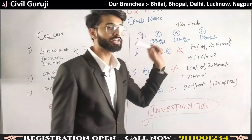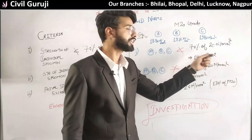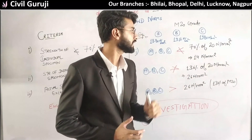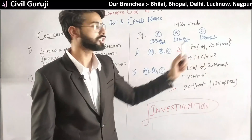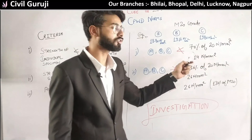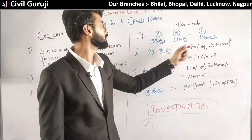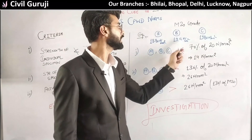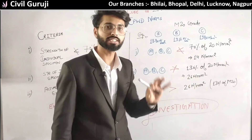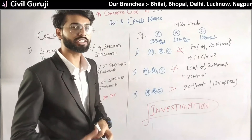First, we find 70% of the specified strength for M20 at 28 days. The specified strength is 20 N/mm², so 70% of 20 N/mm² comes out to be 14 N/mm². Clearly, none of the individual specimens A, B, or C are less than 14 N/mm², so our first criteria passes.